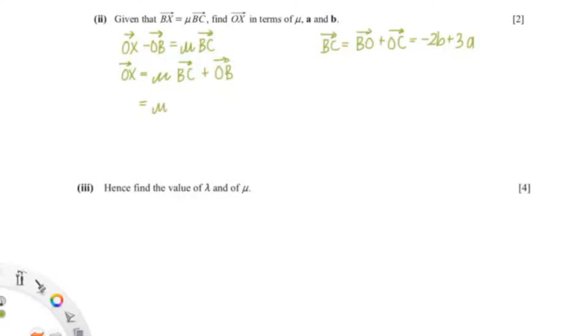So that would give us mu times negative 2B plus 3A plus 2B. And I'm just going to expand it giving me negative 2 mu B plus 2B. And I'm going to factorize it back. So that is 3 mu A plus B times 2 minus 2 mu.